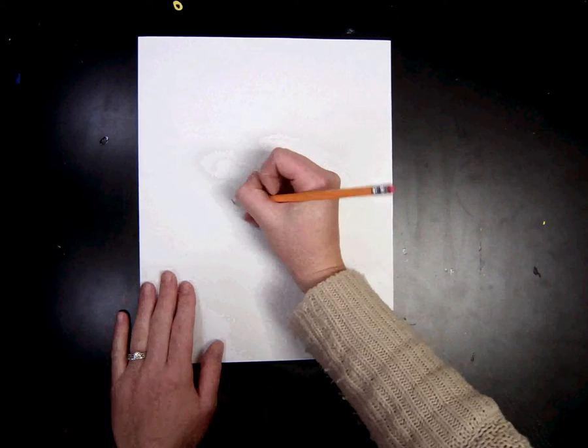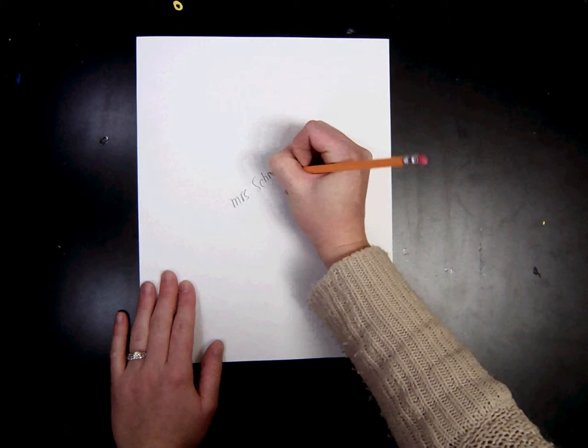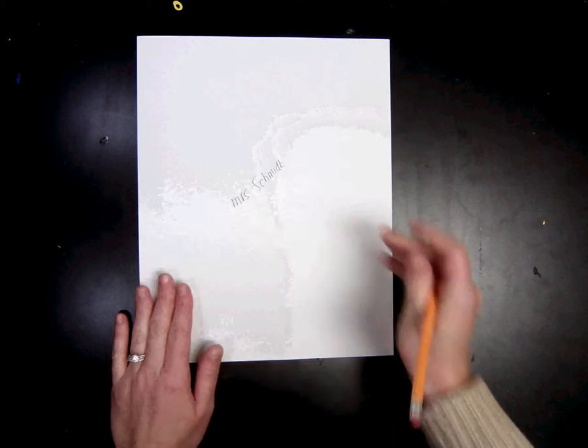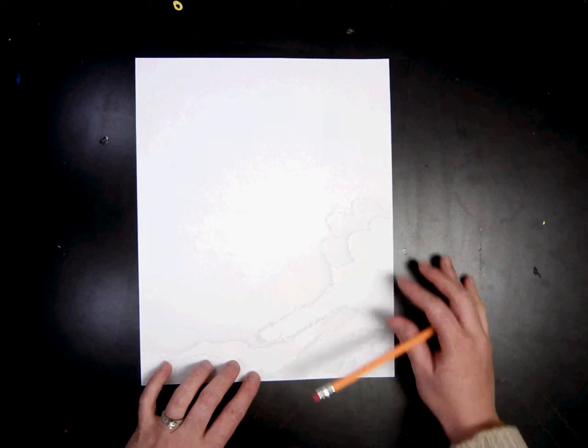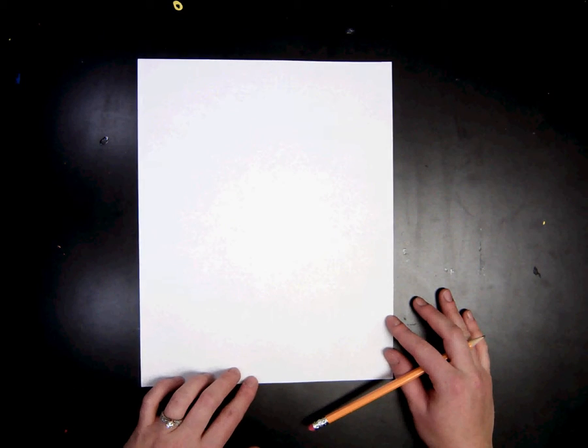Before we begin, the first thing I want to do is write your name on the back. Once you've written your name, turn it over, and I want your paper the portrait way, so the tall way.